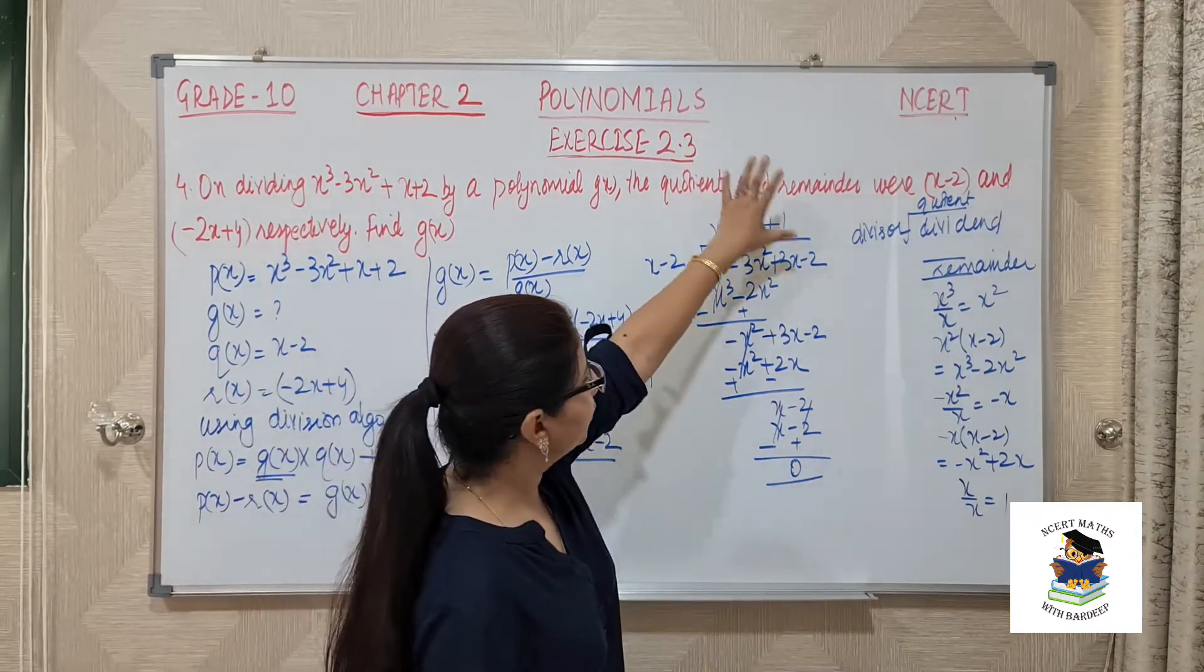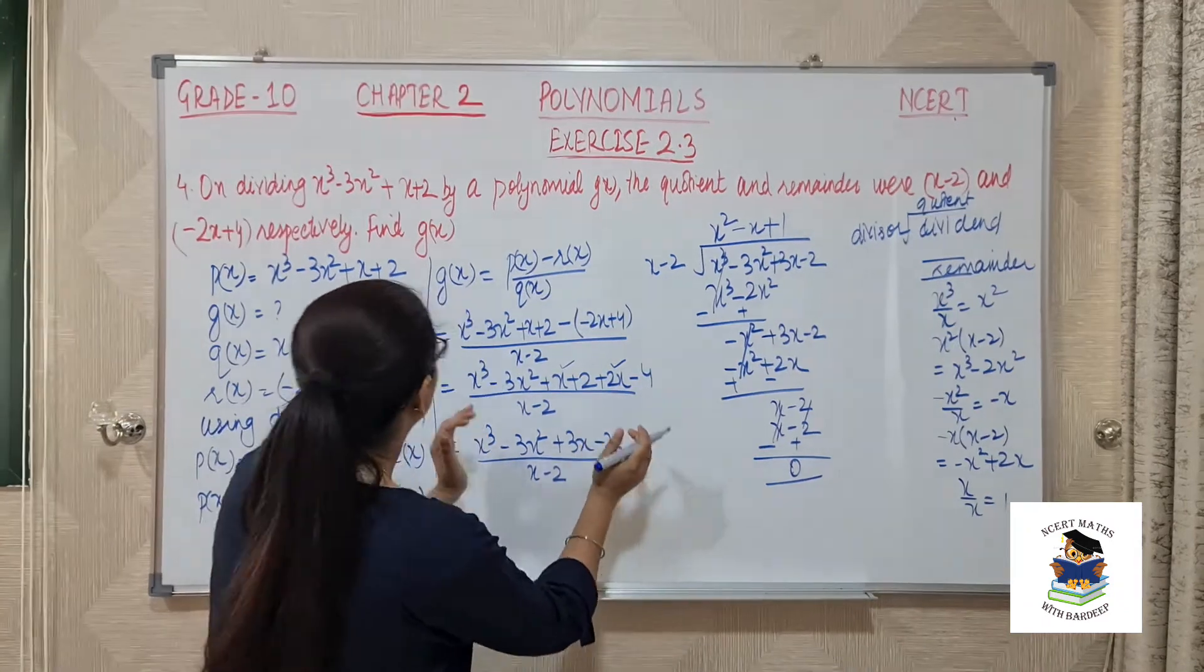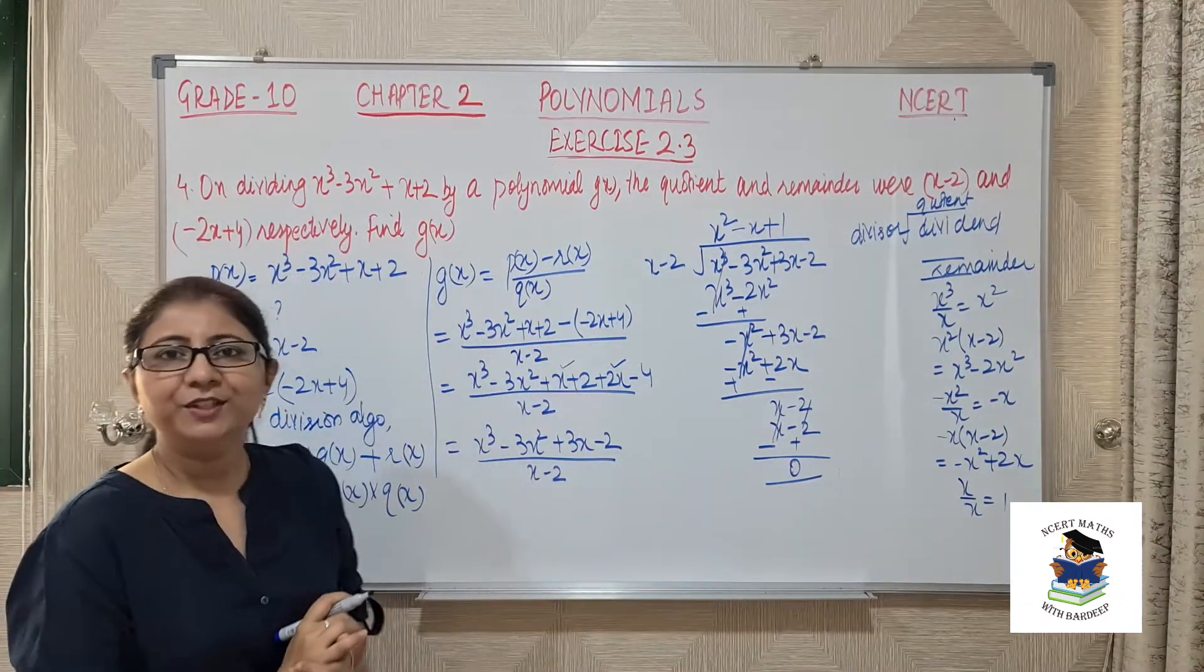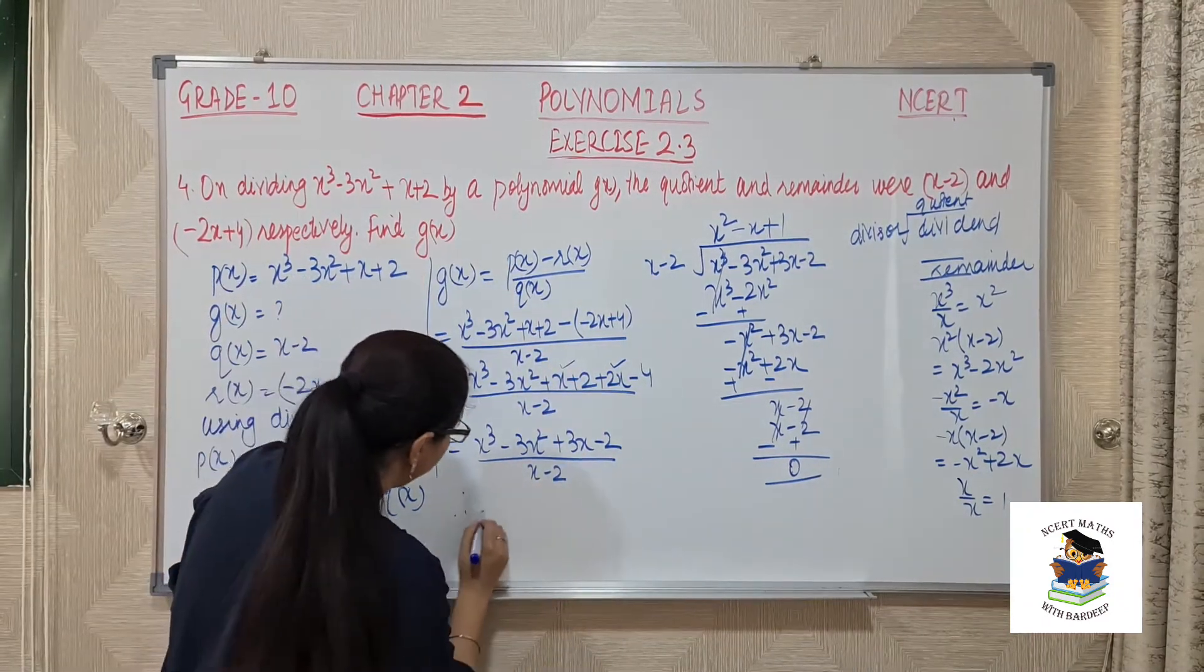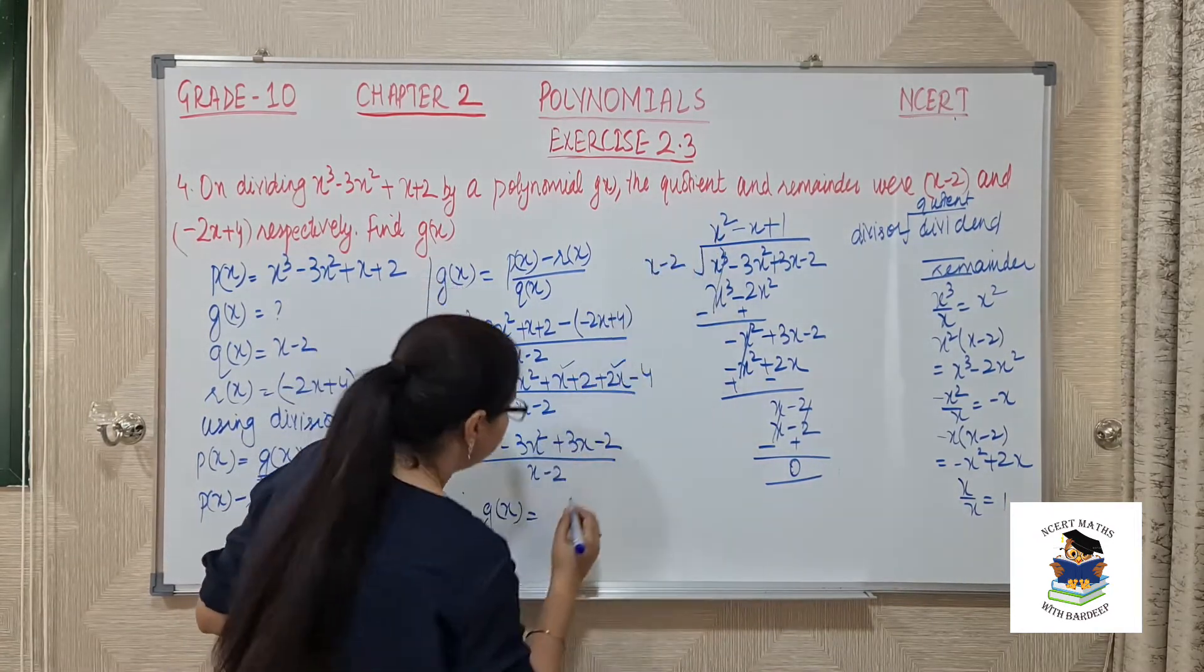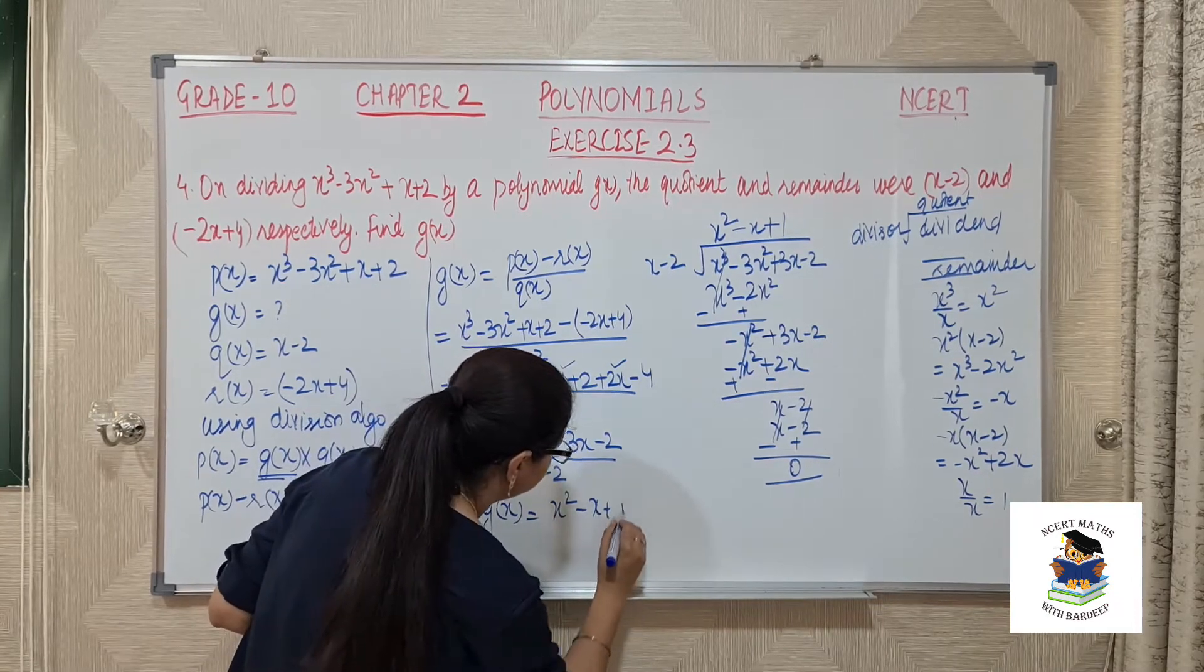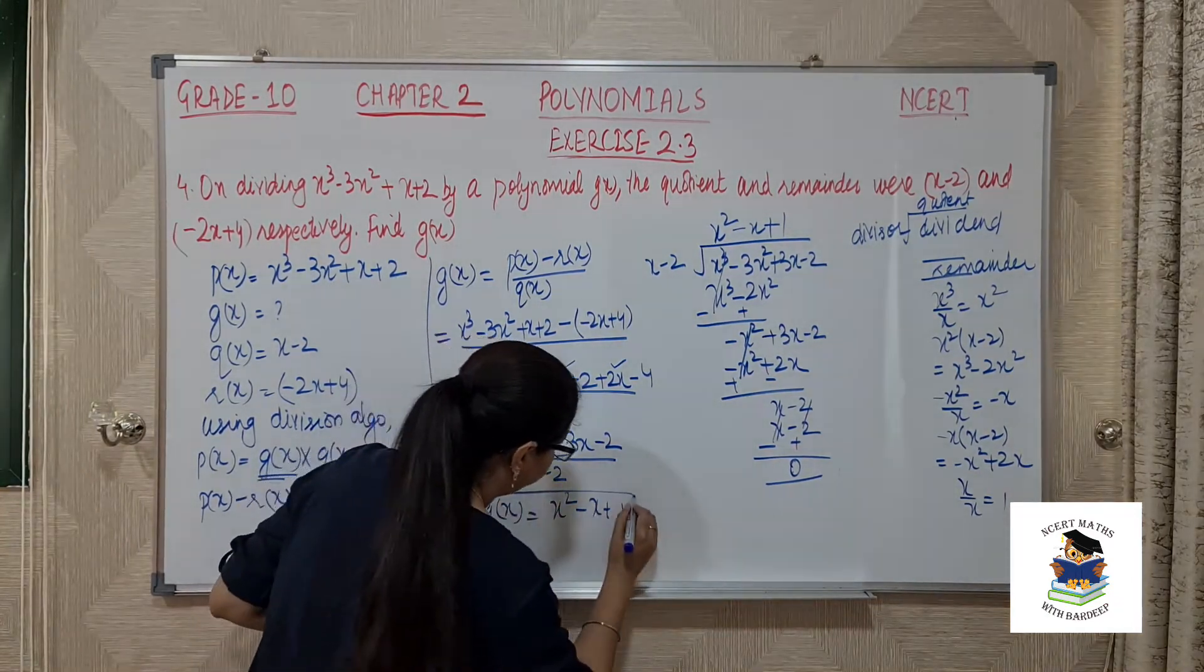Now whatever is our quotient, that is the answer of this division, and that answer is equivalent to gx. So we can say therefore gx is equal to this quotient, that is x square minus x plus 1.